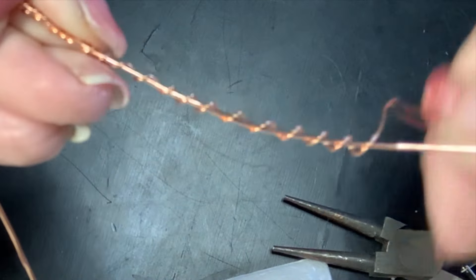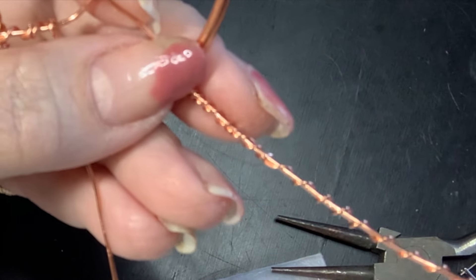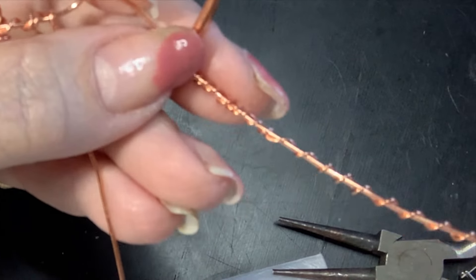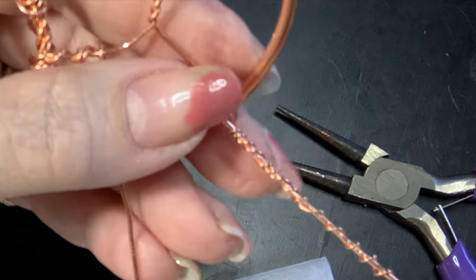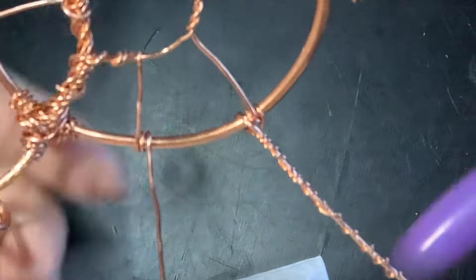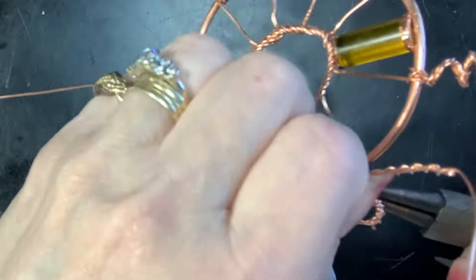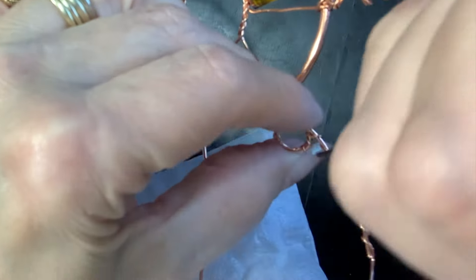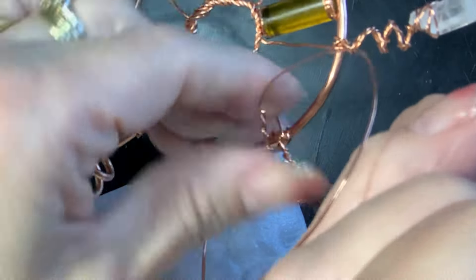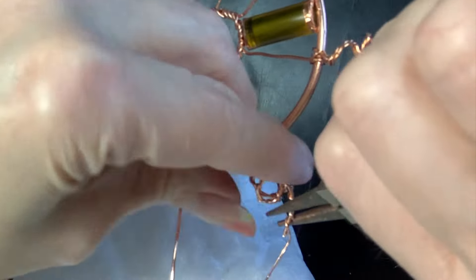I thought that the thicker the wire, the more power would be converted into the soil. So I wrapped the 22 gauge copper wire around the thicker 18 gauge wire.